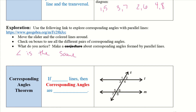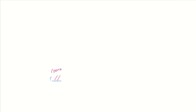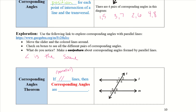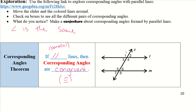Corresponding angle theorem: if parallel lines, then corresponding angles are congruent. The symbol for congruent is an equal sign with a squiggle on top. So that means if we take our corresponding angles — one and five — angle one is congruent to five, three is congruent to seven, two is congruent to six, and four is congruent to eight.